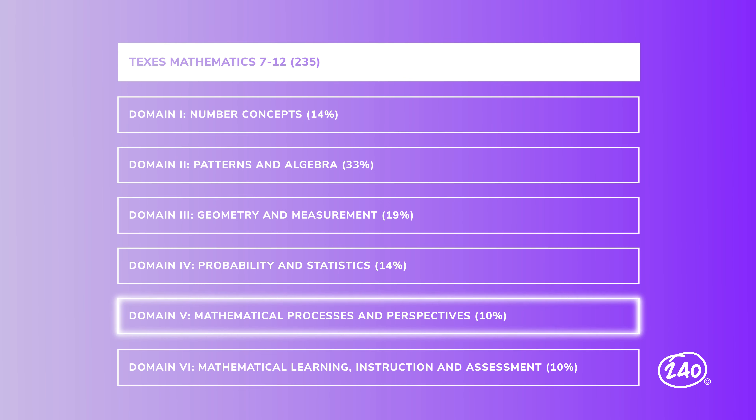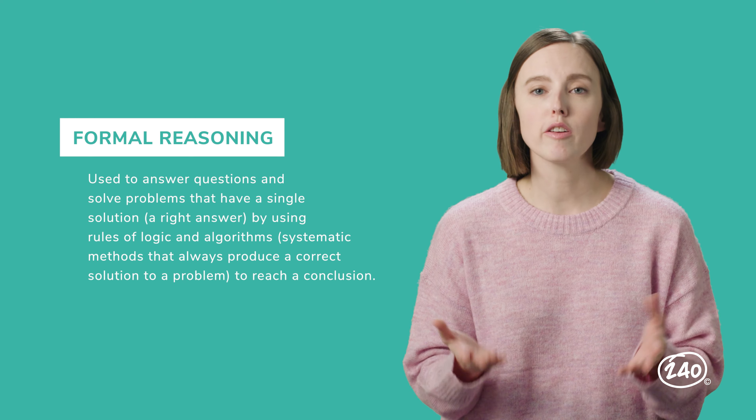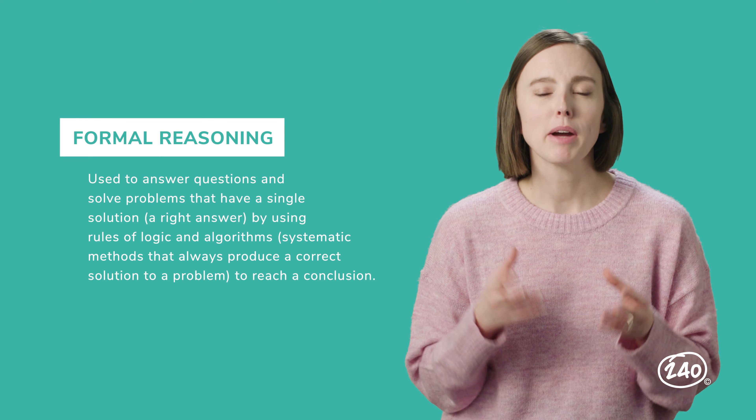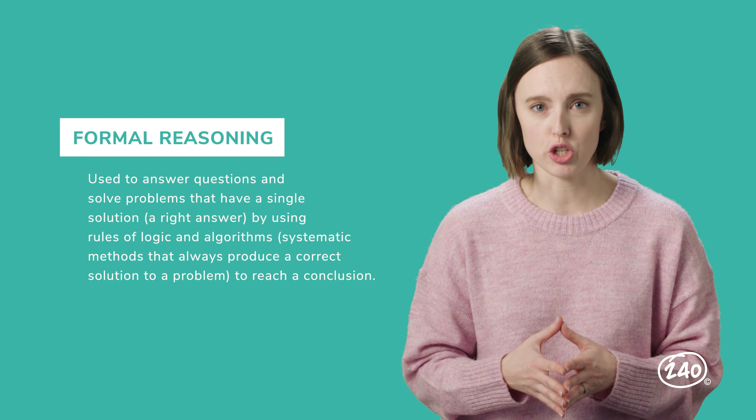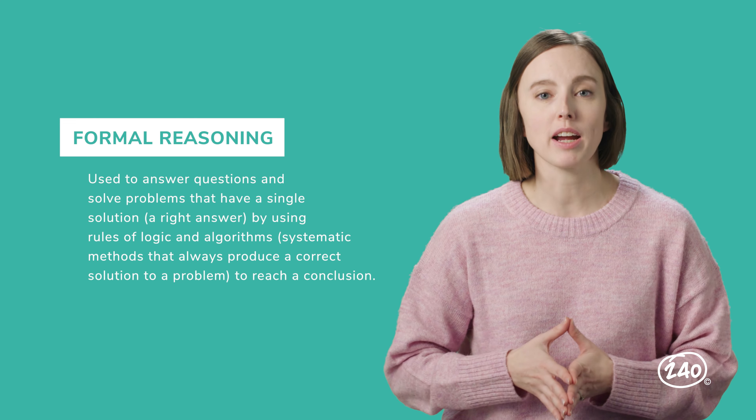There are many more definitions in this domain, but let's keep on rolling into mathematical processes and perspectives. You'll need to understand and use mathematical processes to reason mathematically, to solve mathematical problems, make mathematical connections within and outside of mathematics, and to communicate mathematically. Luckily, we've only got two competencies here. This is a bit different from our previous domains, and it's all about mathematical reasoning. Let's break down two forms of reasoning. Formal reasoning is used to answer questions and solve problems that have a single solution or right answer, by using rules of logic and algorithms to reach a conclusion, like systematic methods that always produce a correct solution to a problem.